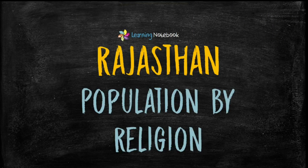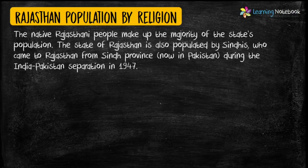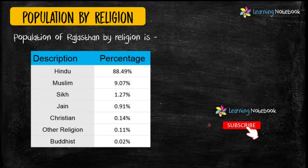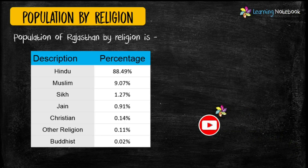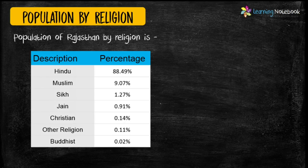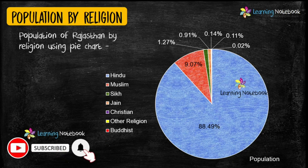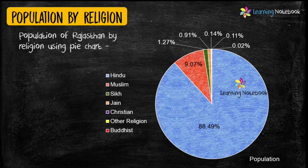Next, you can include population of Rajasthan by religion in your maths-art integrated project. Pie chart is another beautiful way of representing the given data. So you may use a pie chart to show population of Rajasthan by religion.